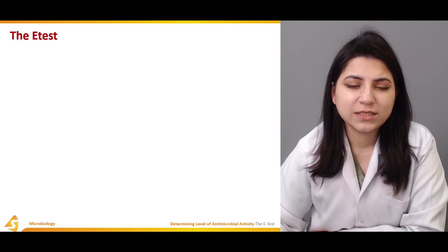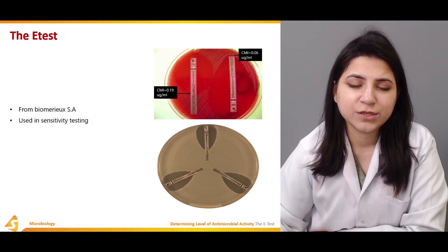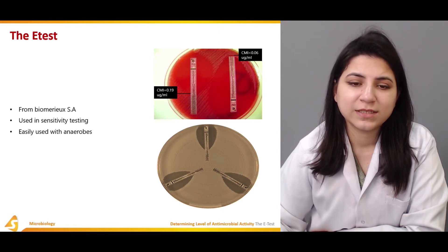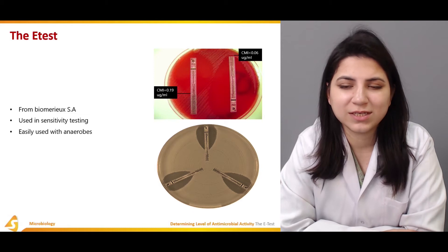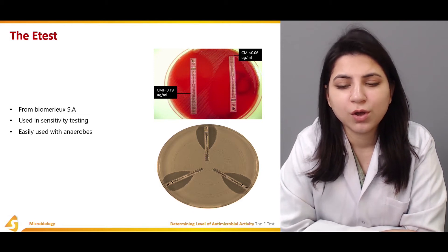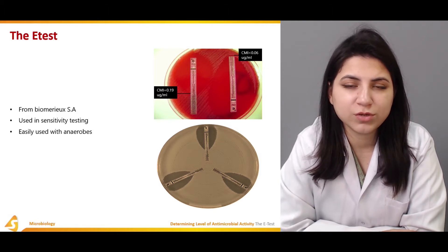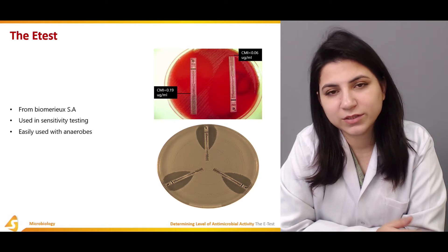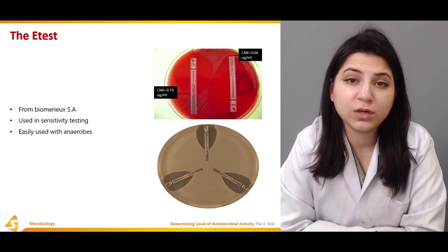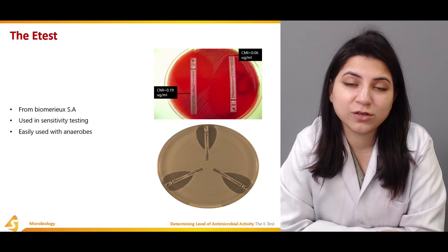The E-test was developed by a company known as Biomerics. It is used in sensitivity testing and is easily used with anaerobes. As you can see in the figure, a strip is placed onto the agar medium and the clear zone around the strip shows the concentration of the antimicrobial agent which kills the bacteria. Beyond that concentration, as you decrease the concentration, bacterial growth can be seen.